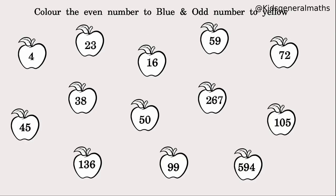Next we are going to colour the even numbers blue and odd numbers yellow. They have given some apples. First we look at 4 — it is an even number, so colour it blue. Next, 23: the last digit is 3, which is an odd number, so 23 is an odd number and should be coloured yellow.